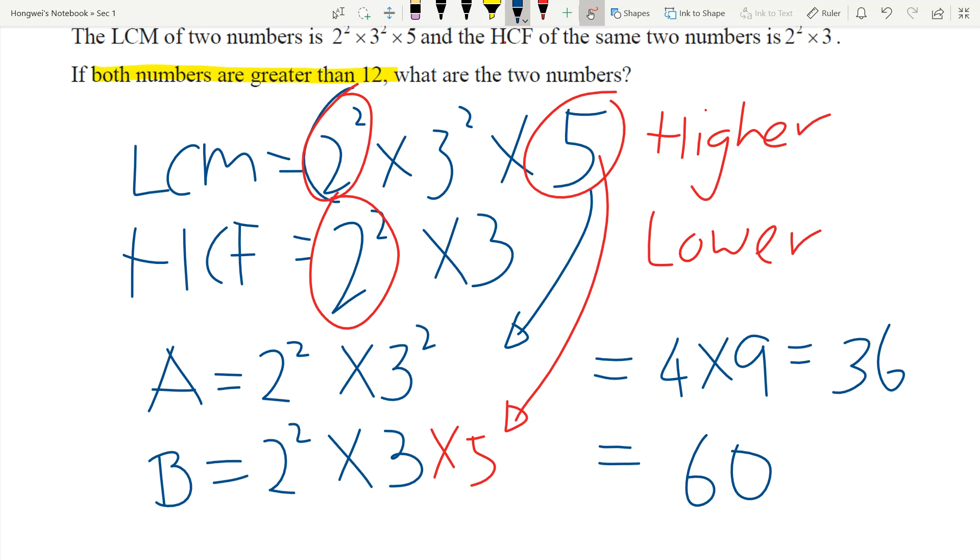This is called a reverse method in finding the numbers A and B. Again, if you do not understand what I am talking about, about this higher power and lower power comparison method, please go and take a look at the comparison method video before coming to this. Thank you.